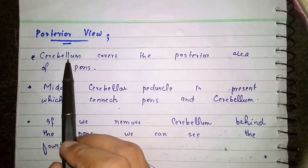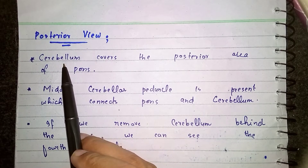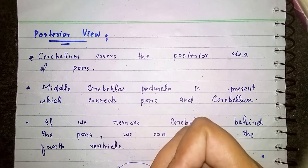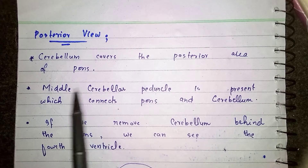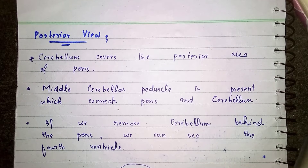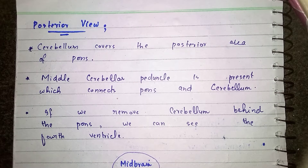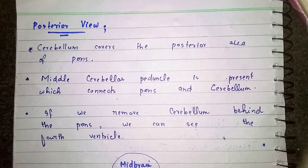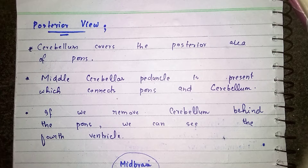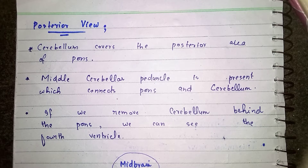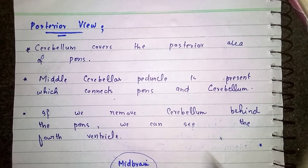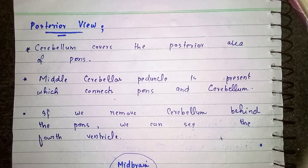Now we will discuss the posterior view of PONS. If we see PONS from the posterior side, we see the cerebellum, which covers the posterior area of PONS. To see the posterior surface of PONS, we must remove the cerebellum, which is connected to PONS via the middle cerebellar peduncle. On the posterior surface, we see a central line called the Median Sulcus. Along the median sulcus, there is an elevated area called the Medial Eminence.